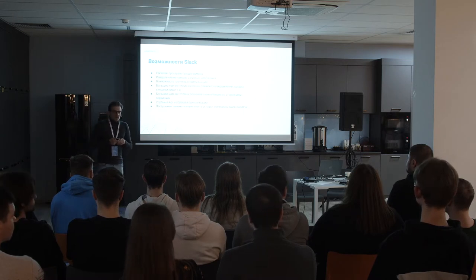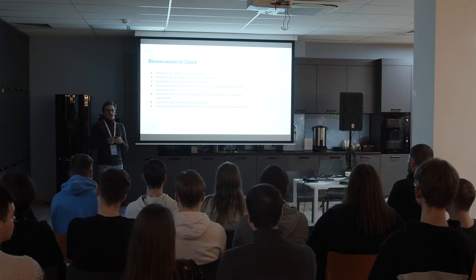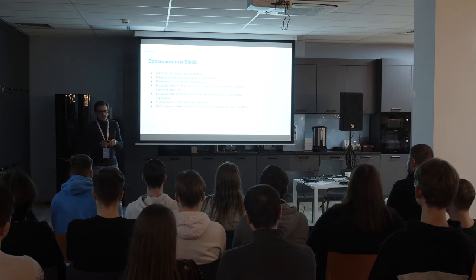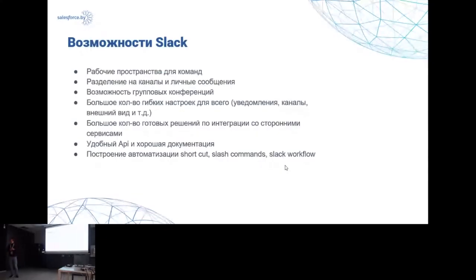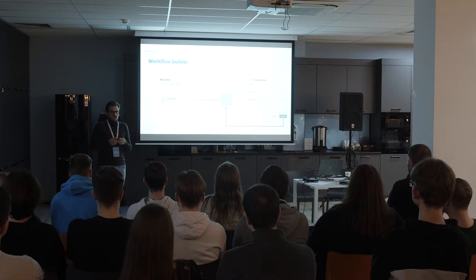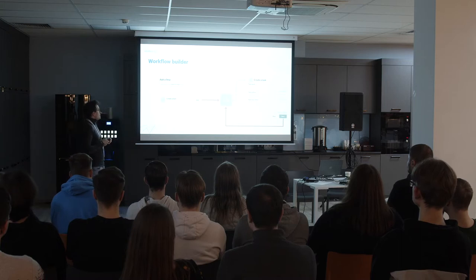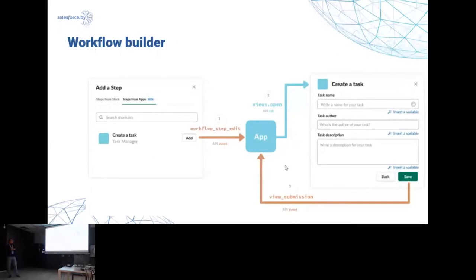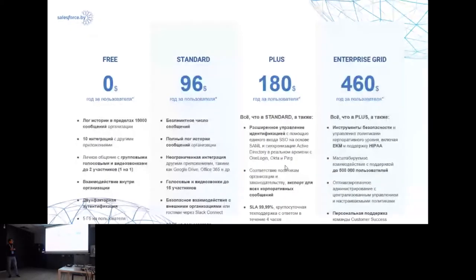Важная вещь — это возможности автоматизации. Есть shortcuts и slash-команды: пользователь вводит, например, slash с командой, и происходит какая-то логика, которую вы заложили — приходит уведомление автоматически, что-то куда-то отсылается. Также есть Slack Workflow Builder — похожая штука, как Flow или Process Builder в Salesforce. Она позволяет накликать логику, создавать steps и интегрировать с другими приложениями.